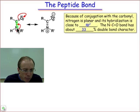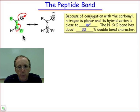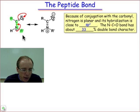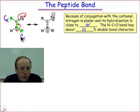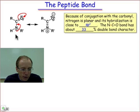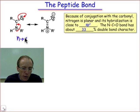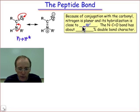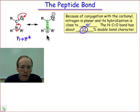Here's a peptide linkage. It joins two adjacent amino acids. R and R' represent alpha carbons on adjacent amino acids. The important point about this being an amide functional group is that there's an important N-to-π* interaction that is going to enforce a significant amount of double bond character — about 33% —